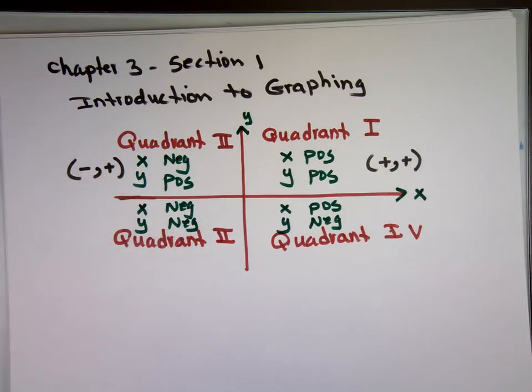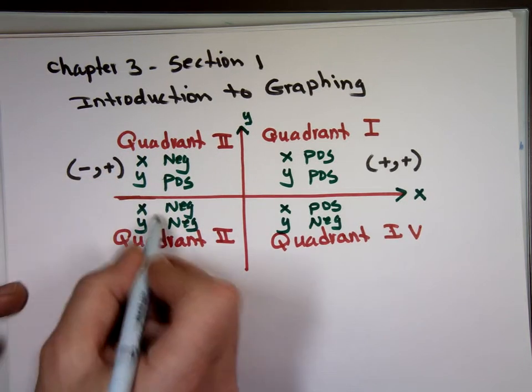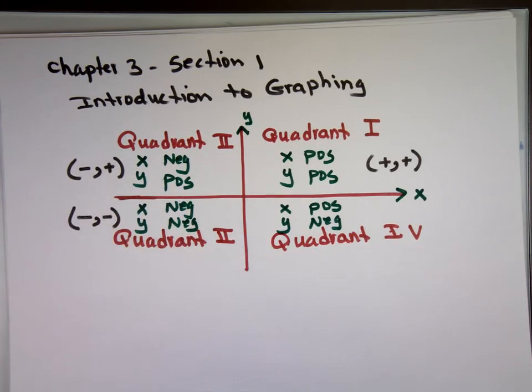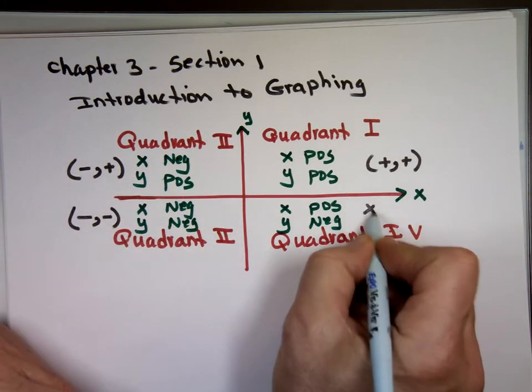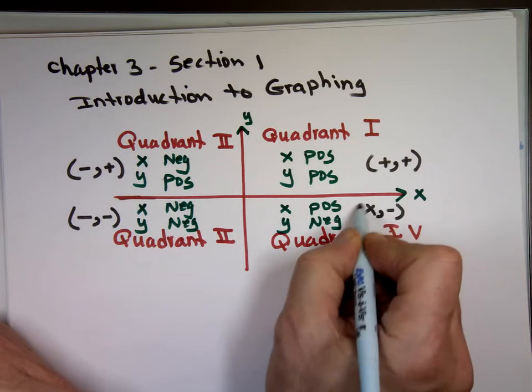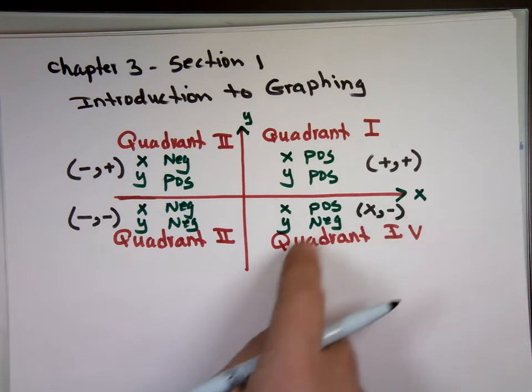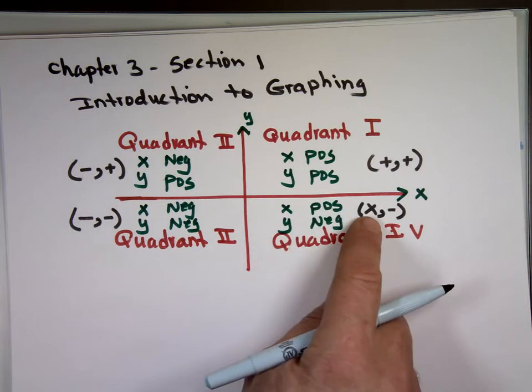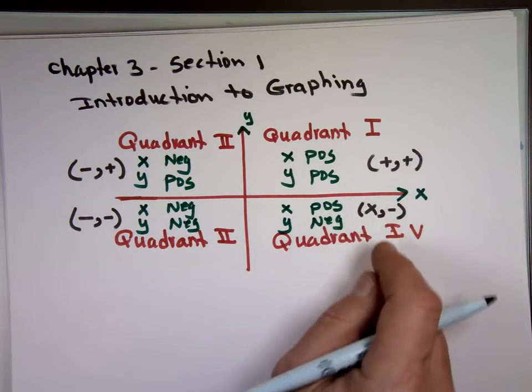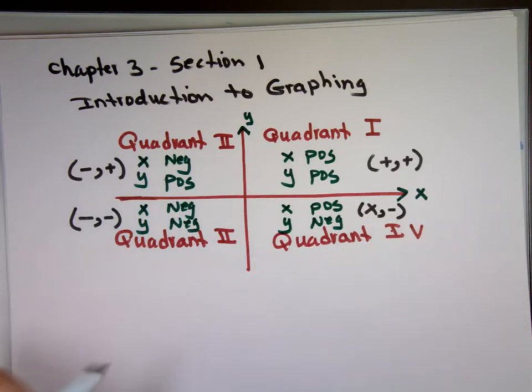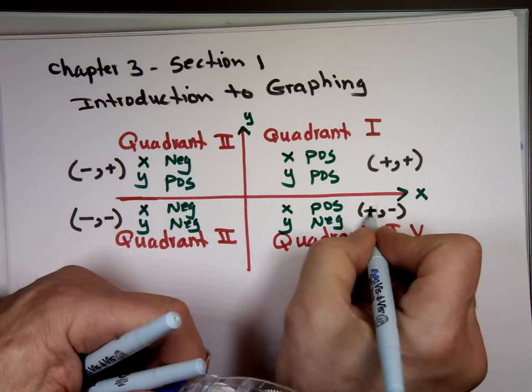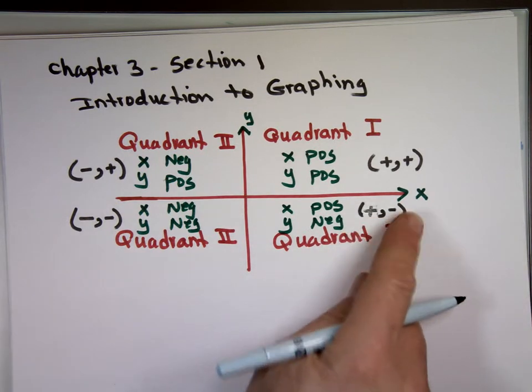This one, both negative. Negative, negative. And this one, x is positive, y is negative. So a lot of times you'll see it looking like this. Instead of x is positive, y is negative, you'll go plus, comma, negative. Positive, comma, negative.